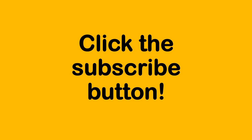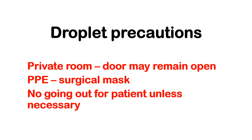What are the droplet precautions? Assign the patient to a private room — the door may remain open. Every time you enter the patient's room, wear a PPE, that is a surgical mask. No going out for the patient unnecessarily. If the patient has to go out, let the patient use a surgical mask.